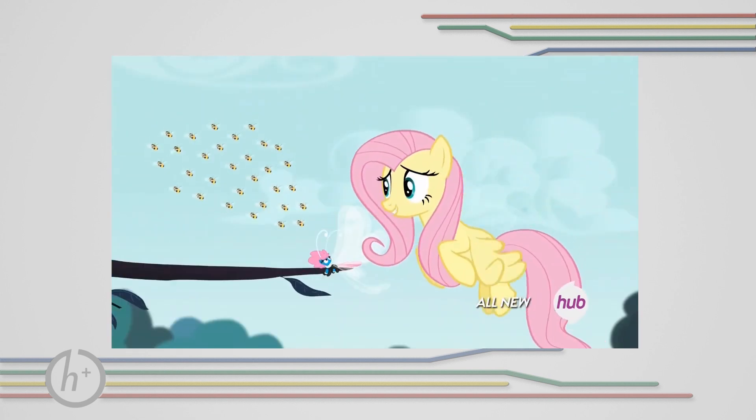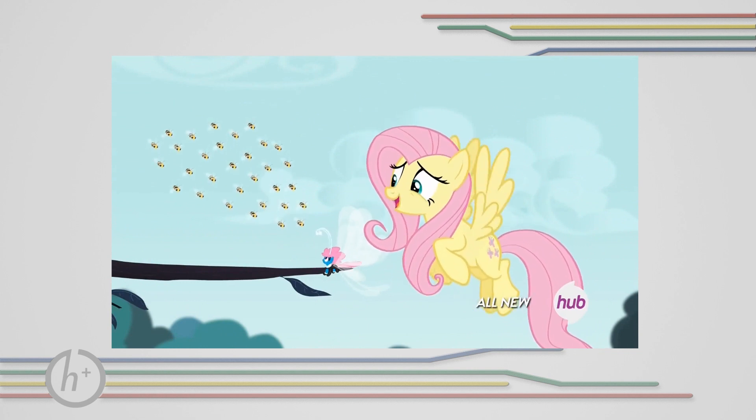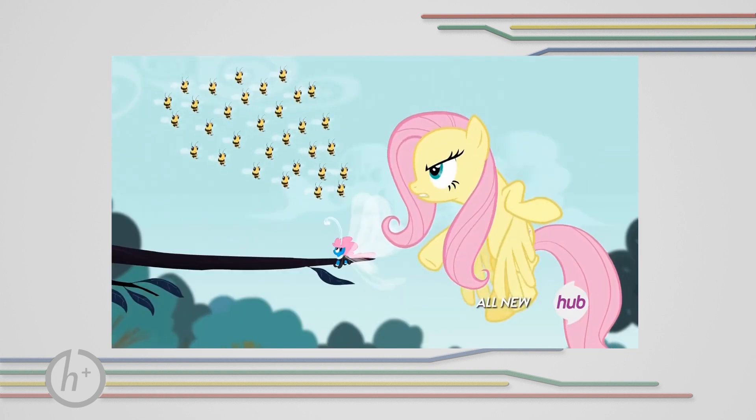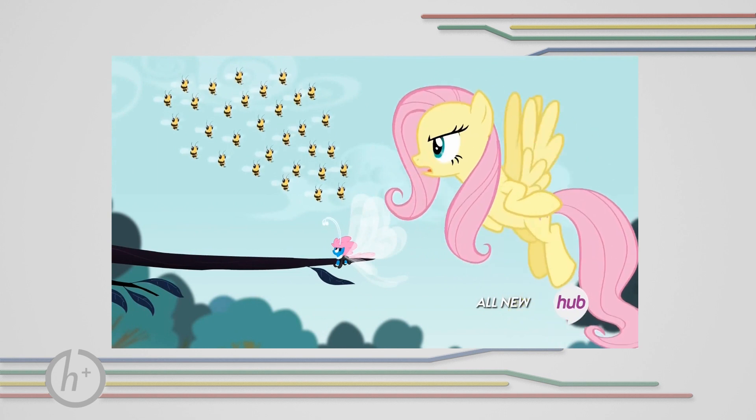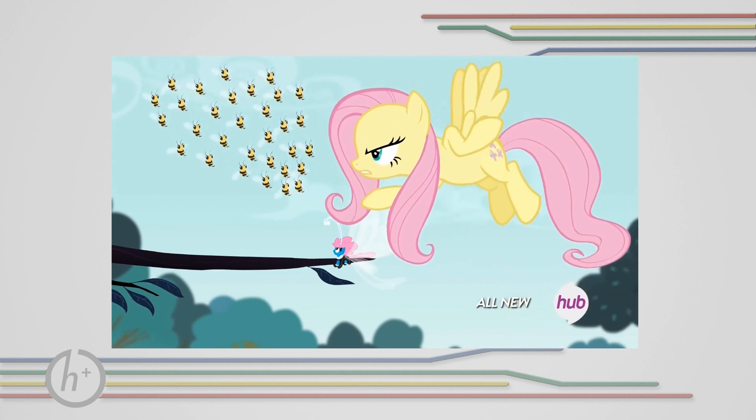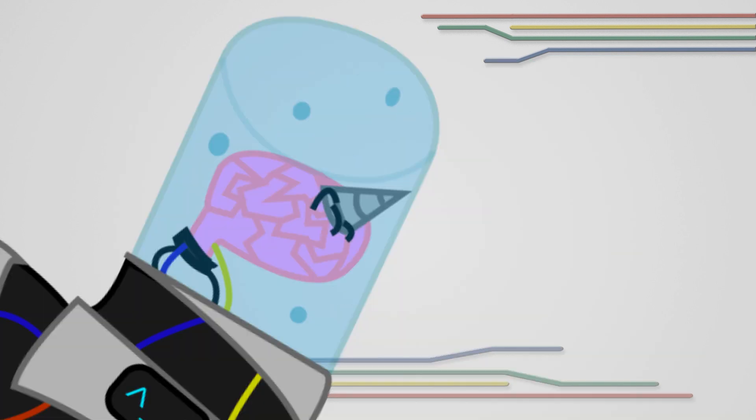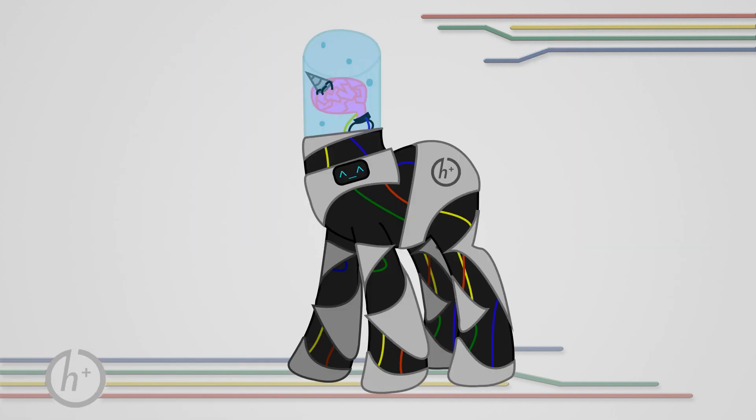But here comes Fluttershy to the rescue. Fluttershy, at first, tries to kindly ask the bees to leave the Seabreeze alone. But after the bees don't listen, Fluttershy goes into assertive mode and tells the bees to buzz off. Get it? Buzz off? Because bees and... Oh, look, a key!